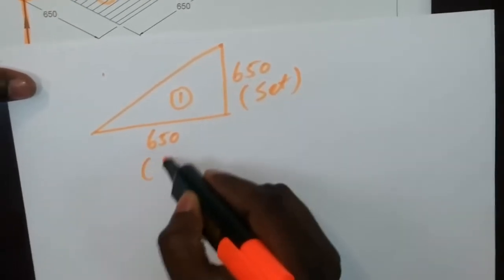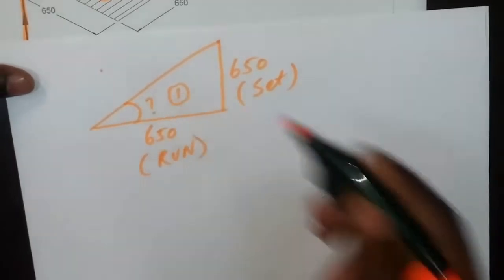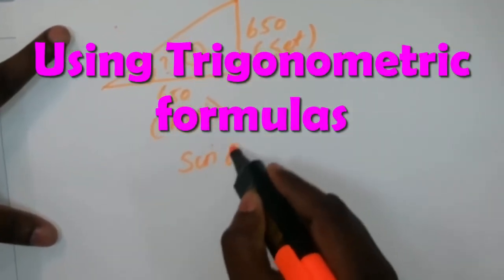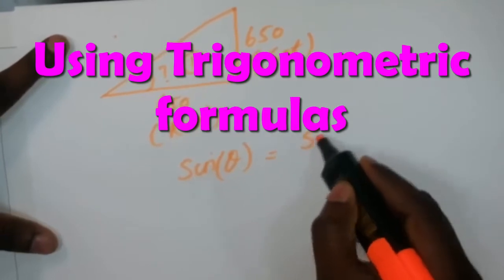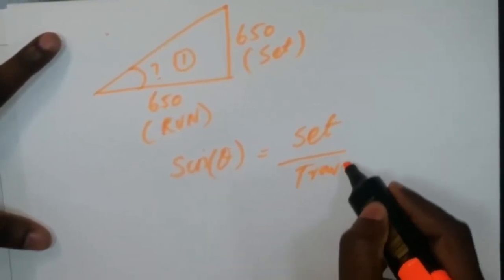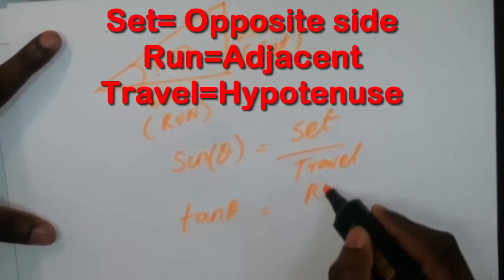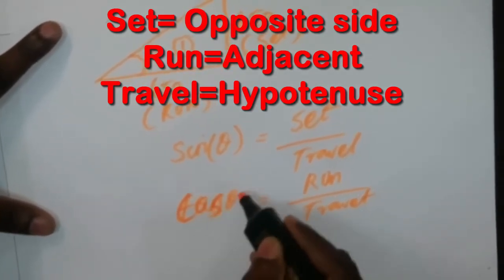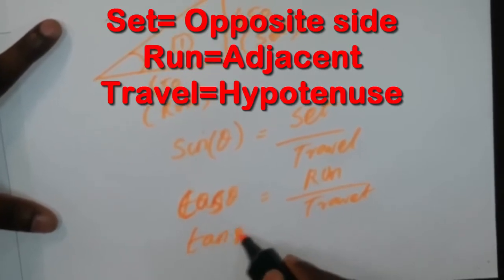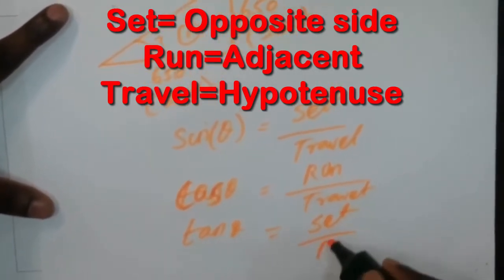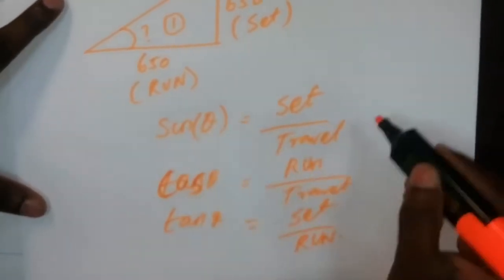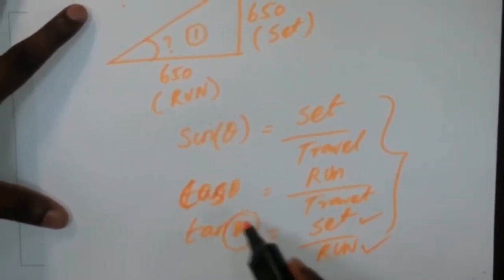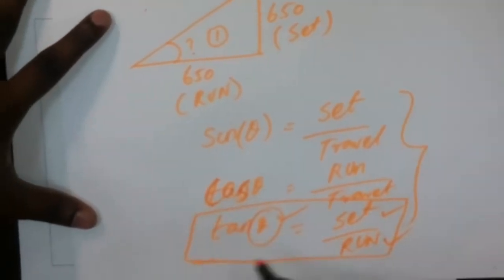Using the trigonometric formula: sine theta equals set divided by travel, cos theta equals run divided by travel, and tan theta equals set divided by run. Since we know the set and the run, we will use the tan theta formula to find this degree.